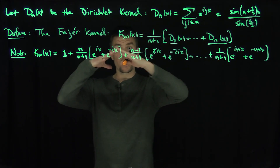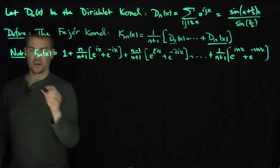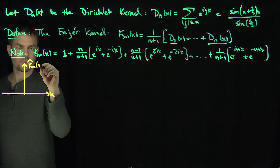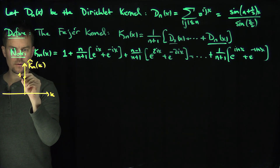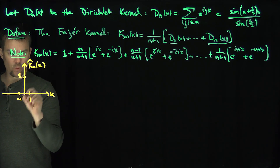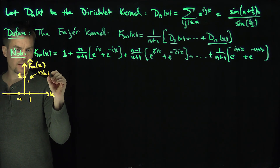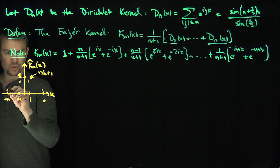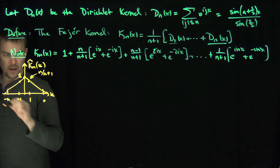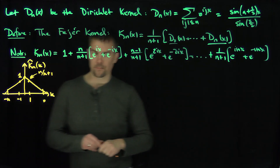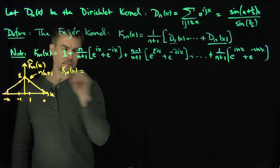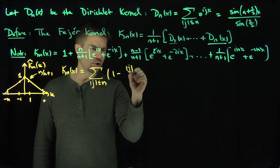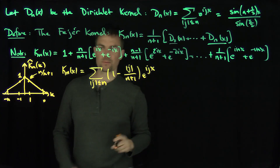These Fourier modes are decreasing in a triangular shape. If I plot the spectrum — the k-axis — the zero coefficient is 1, the modes at plus or minus 1 have height n over (n+1), decreasing symmetrically, all the way down to 1 over (n+1) at plus or minus n, and 0 at plus or minus (n+1). So the spectrum has this triangular shape, unlike the ordinary partial Fourier series. We can write kN of x as the sum over |j| ≤ n of (1 minus |j| over (n+1)) times e to the ijx. That's our formula for the Fejér kernel.